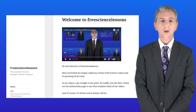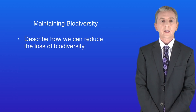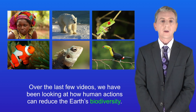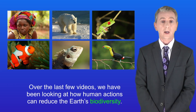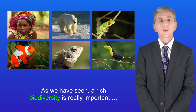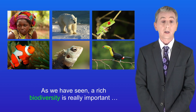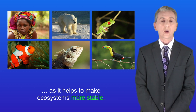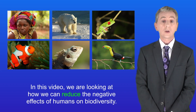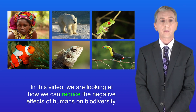Hi and welcome back to freesciencelessons.co.uk. By the end of this video you should be able to describe how we can reduce the loss of biodiversity. Over the last few videos we've been looking at how human actions can reduce the Earth's biodiversity, and remember that biodiversity is the variety of all the different species of organisms on Earth. As we've seen, a rich biodiversity is really important as it helps to make ecosystems more stable. So in this video we're looking at how we can reduce the negative effects of humans on biodiversity.